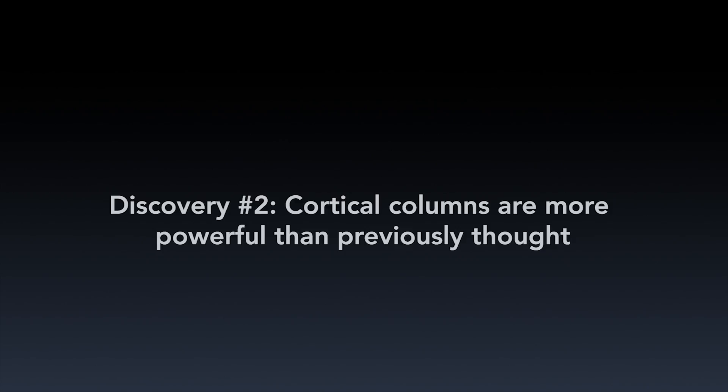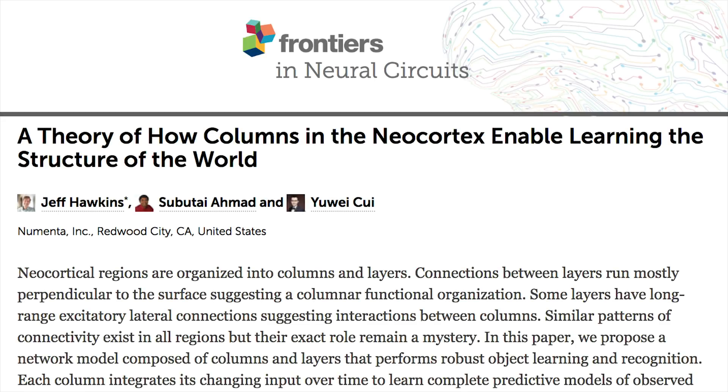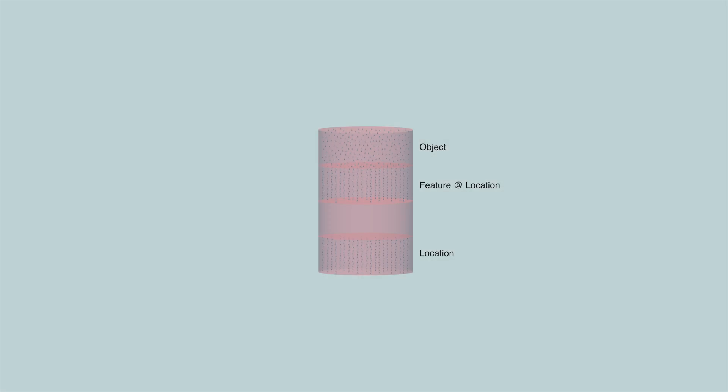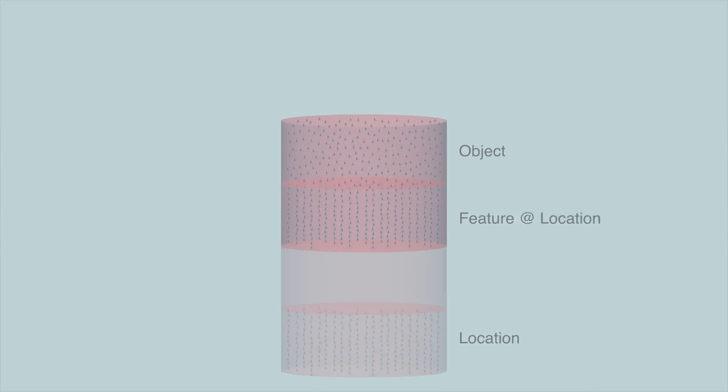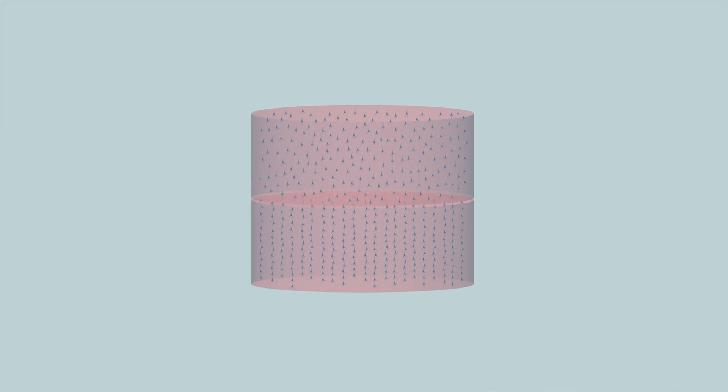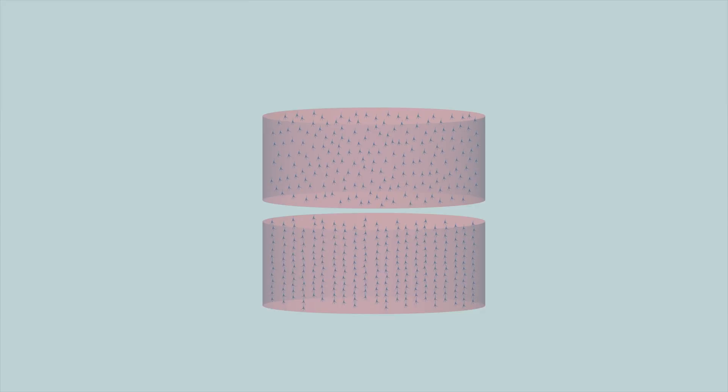Our second major discovery was that cortical columns are more powerful than previously thought. This discovery is documented in an October 2017 paper called A Theory of How Columns in the Neocortex Enable Learning the Structure of the World. We realized that everywhere in the neocortex there is a location signal. Some of the layers in each column are processing information about locations.